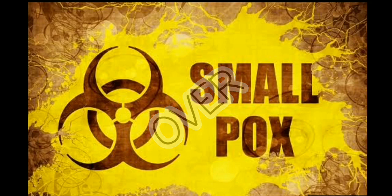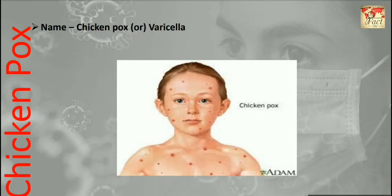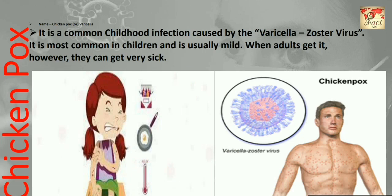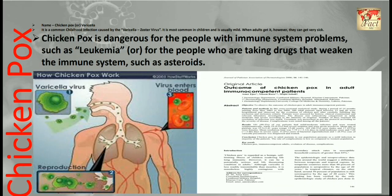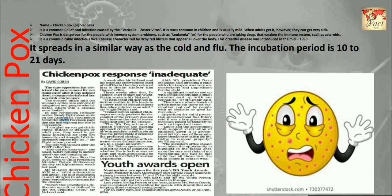Now our topic on smallpox is over. As mentioned earlier, we will also discuss about chickenpox. The name of this hazardous disease is chickenpox, or varicella. It is a common childhood infection caused by the varicella-zoster virus. It is most common in children and is usually mild, but when adults get it they can get very sick. Chickenpox is dangerous for people with immune system problems such as leukemia, or those taking drugs that weaken their immune system. It is a communicable viral disease characterized by itchy red blisters that appear all over the body. This disease was introduced in the mid-1990s and spreads similarly to cold and flu. The incubation period is 10 to 21 days.